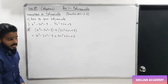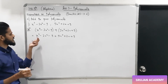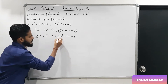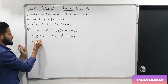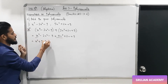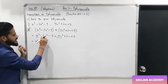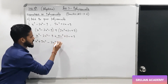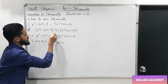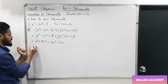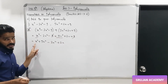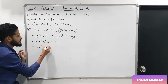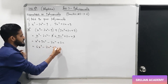Now collect like terms together. The x³ terms: x³ + 5x³. The x² term: −2x². The x term: +2x. And −9 + 9 cancel each other. So x³ + 5x³ = 6x³. The answer is 6x³ − 2x² + 2x.